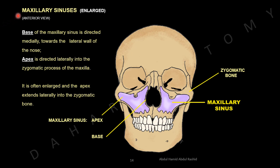An enlarged maxillary sinus is called a maxillary sinus continuation. The base of the maxillary sinus is directed medially towards the lateral wall of the nose, and its apex is directed laterally into the zygomatic process of the maxilla — often enlarged and extending laterally into the zygomatic bone.